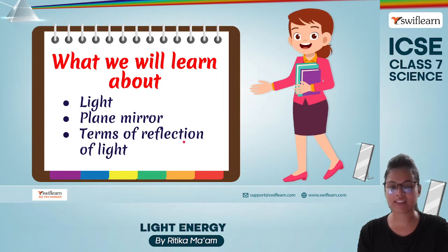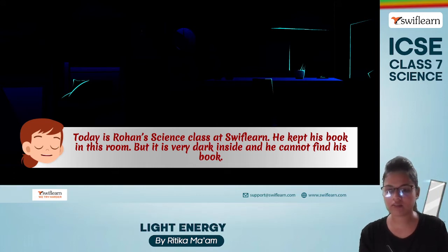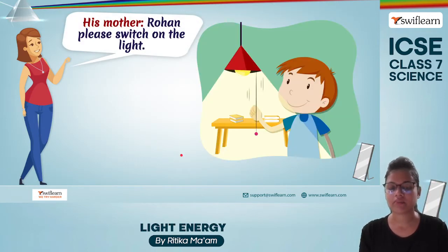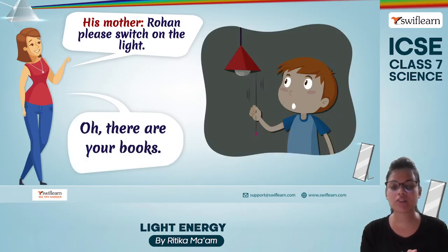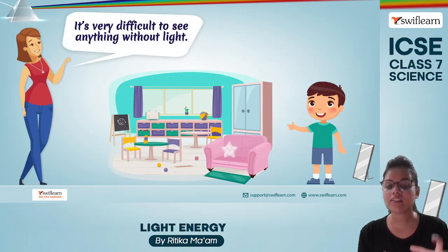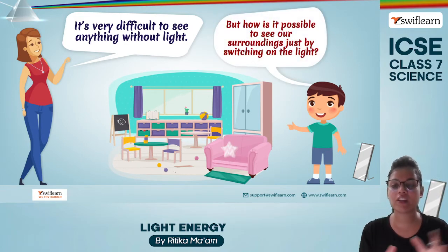Today is Rohan's science class at Swift Learn. He kept his book in his room but it's very dark and he is not able to find his book. His mother tells him to switch on the light, and as soon as he switches on the light he finds the book. So why is it difficult to find anything without light, and what is light? All these answers we are going to see in our further chapter.